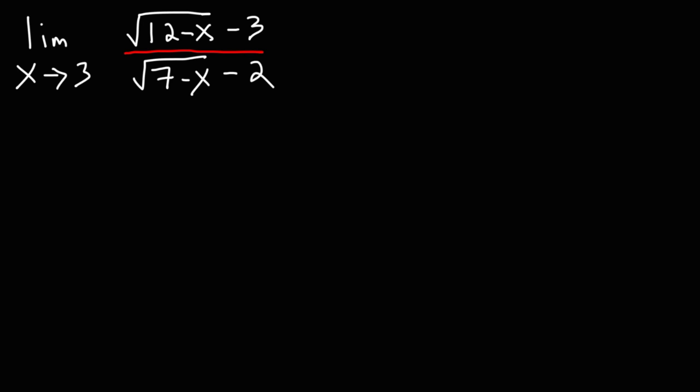Consider the problem on the board. What is the limit as x approaches 3, given the function: the square root of 12 minus x, minus 3, over the square root of 7 minus x, minus 2? How can we evaluate that limit?